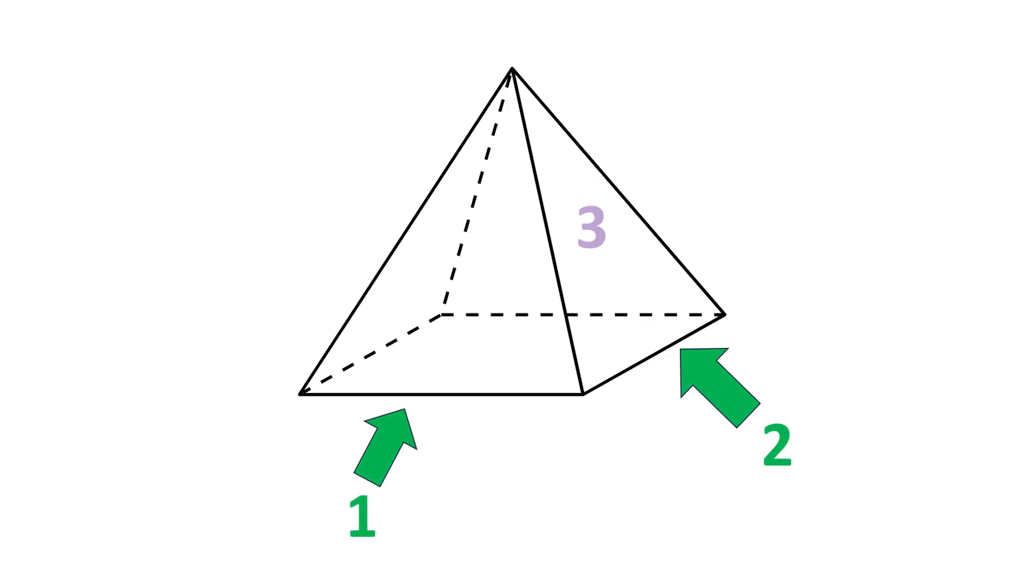When looking at the picture, we can also count these up in a similar way. Each dashed line is an edge behind a surface that we're looking at.